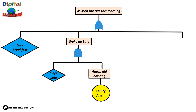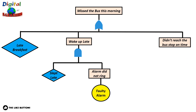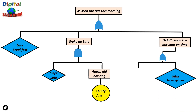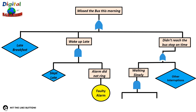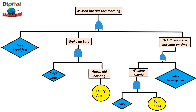The alarm did not ring because of a faulty alarm. 'I slept late' is kept as an undeveloped event. The other event is 'I did not reach the bus stop on time,' where I apply an OR gate. Two events can trigger this: 'other interruptions' — like meeting a friend or relative — kept as an undeveloped event; or 'I am walking slowly,' where I apply an AND gate, because I am lazy and I have a pain in my leg. Both 'lazy' and 'pain in leg' lead to walking slowly, which triggered not reaching the bus stop on time, ultimately leading to missing the bus.